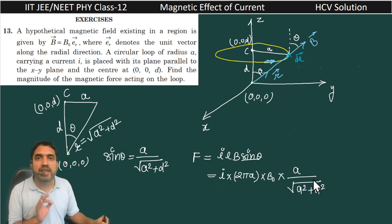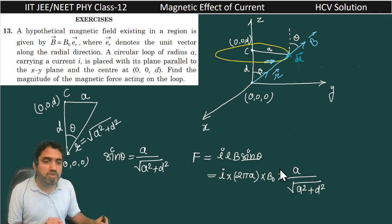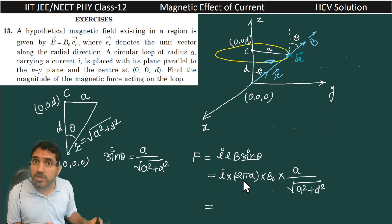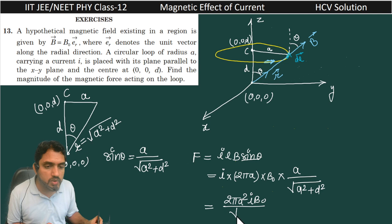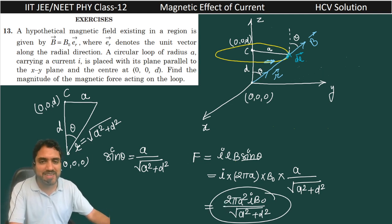If we select any differential element on the circumference of the loop, this angle remains constant and the magnetic field also remains constant. So we can directly use the total length 2πA. The force becomes F = 2πA²IB₀ / √(A² + D²). This is the magnitude of the magnetic force. Thank you very much.